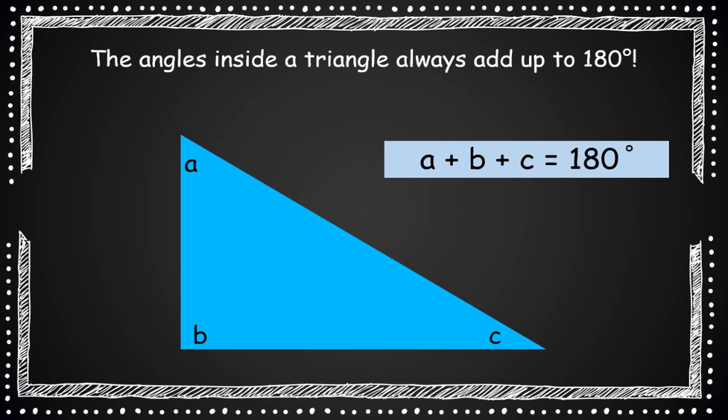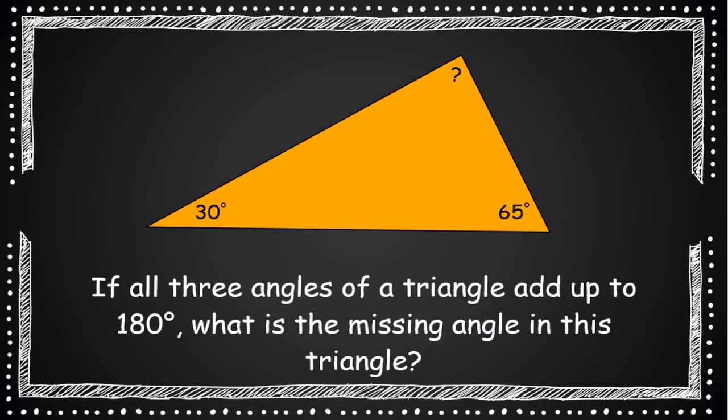Another interesting angles fact is that the angles inside of a triangle, no matter what shape, no matter how big or small, always add up to 180 degrees. So when we add angle A plus angle B plus angle C, it's always going to equal 180.